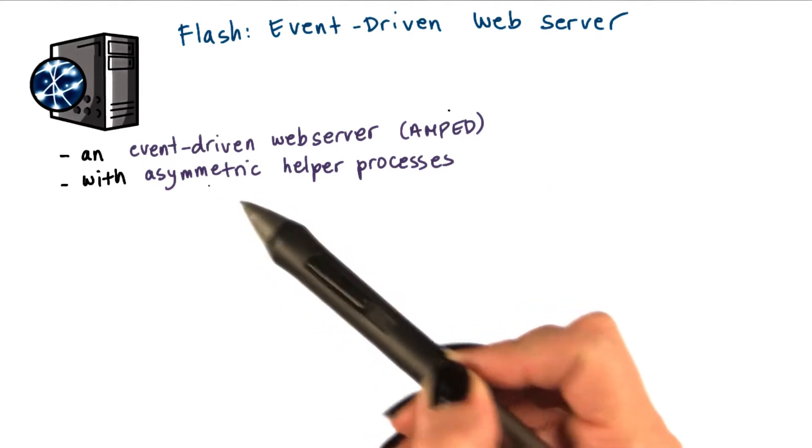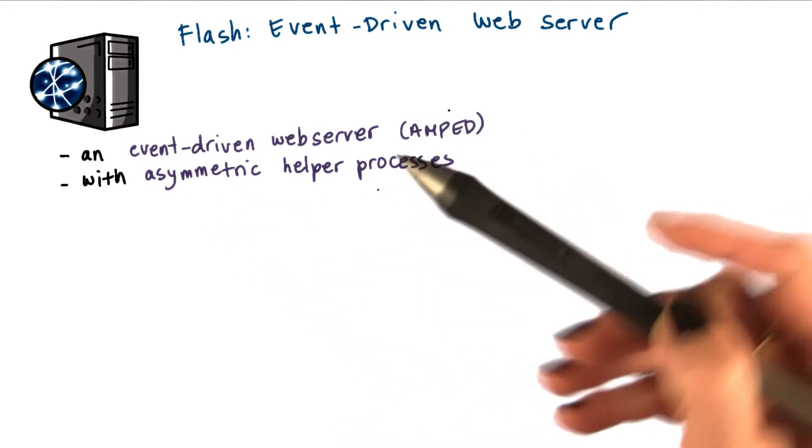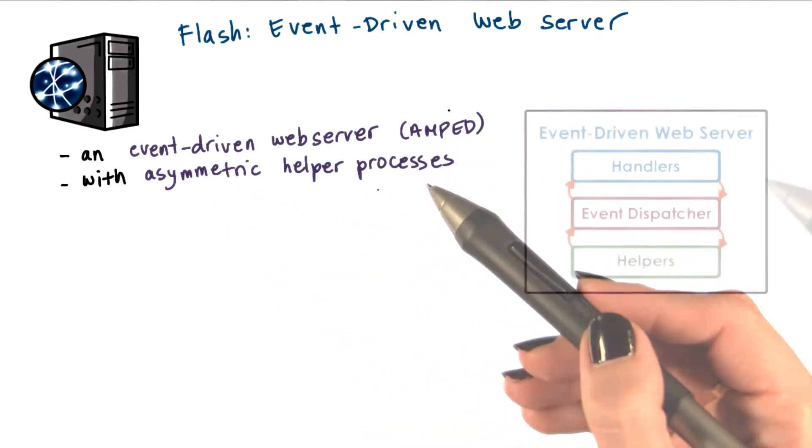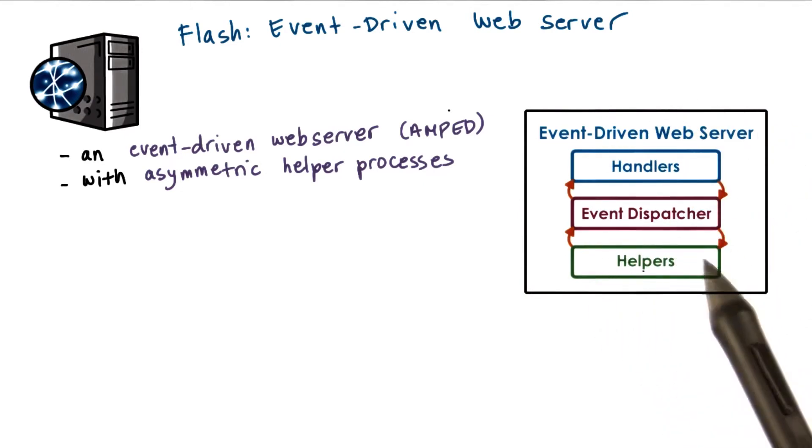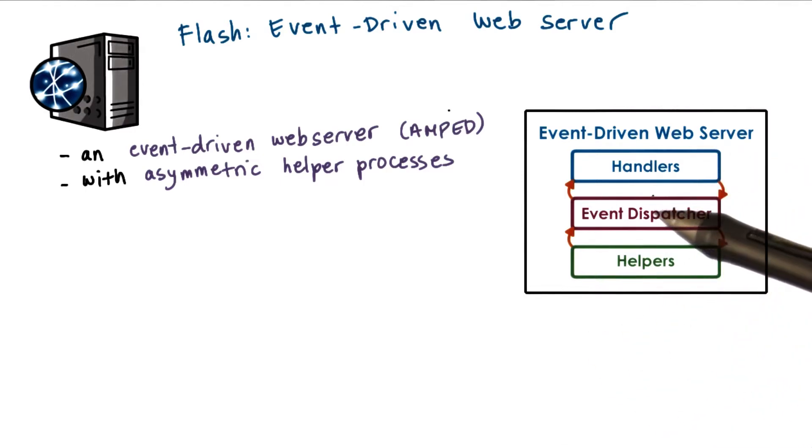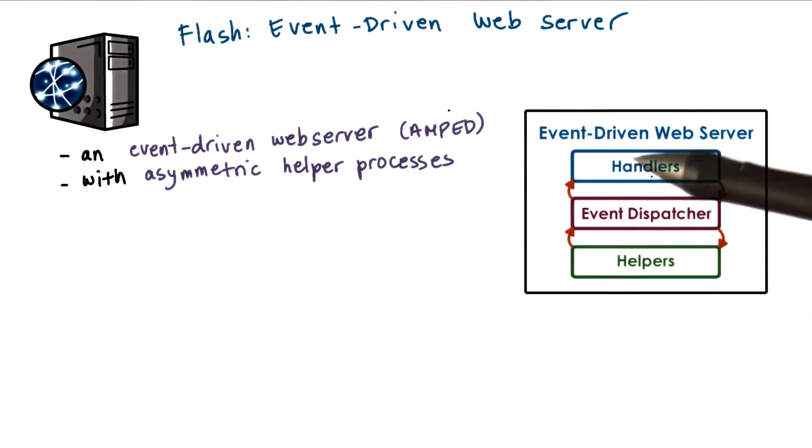It has asymmetric helper processes to deal with blocking IO operations. In the discussion so far, we've described the architecture of Flash. It uses helper processes for blocking IO operations, and everything else is implemented as an event dispatcher with handlers performing different portions of the web servicing tasks.